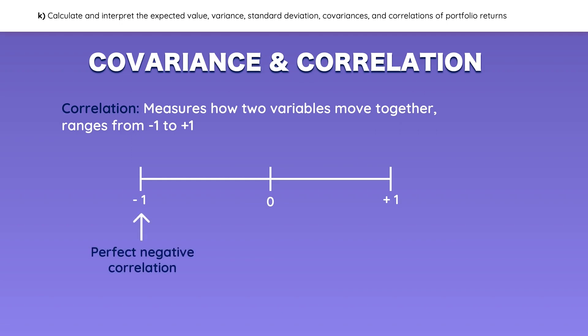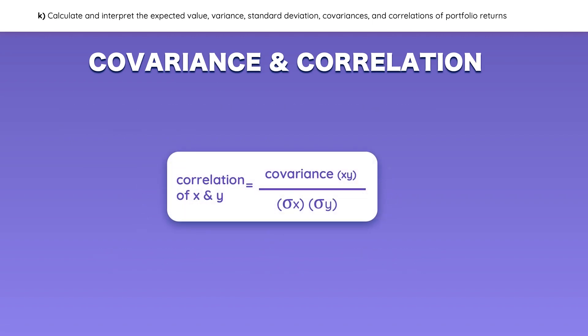If two stocks have a correlation of negative 1, it is a perfect negative correlation, meaning that if one stock increases by 1%, the other will fall by the same amount. A correlation of positive 1 means the stocks move in the same direction and by the same amount. Zero just means there's no correlation between the stocks. The formula for correlation between X and Y is their covariance divided by the standard deviations of each — be careful if the problem gives you variances instead of standard deviations.